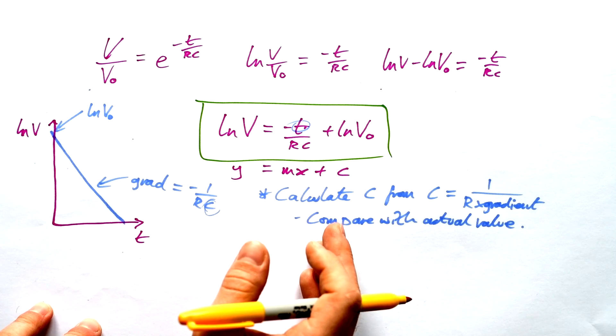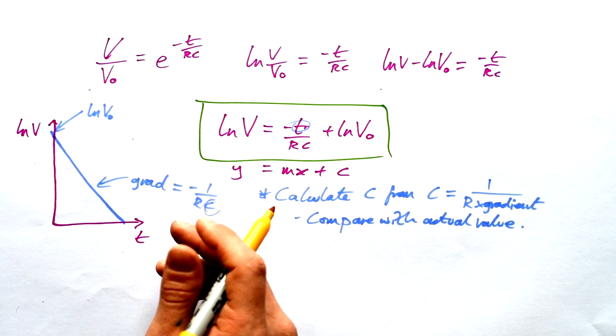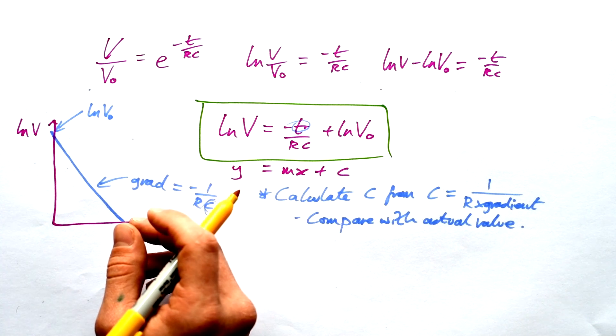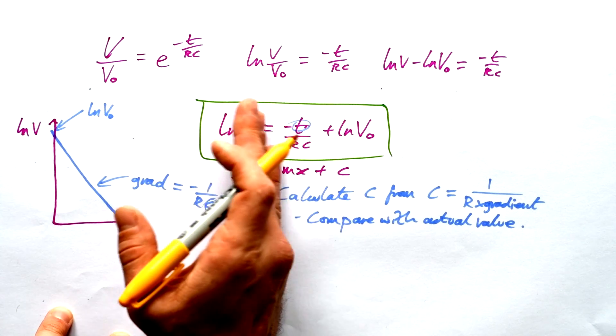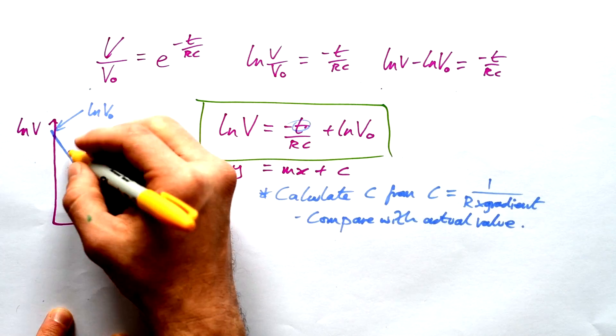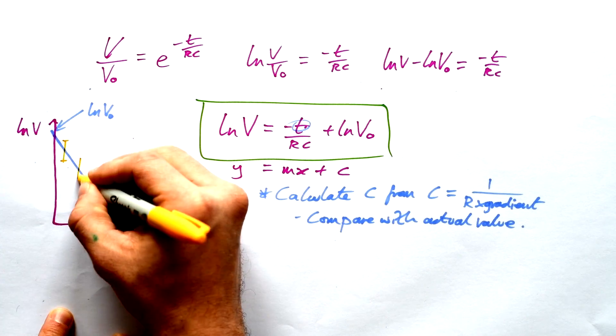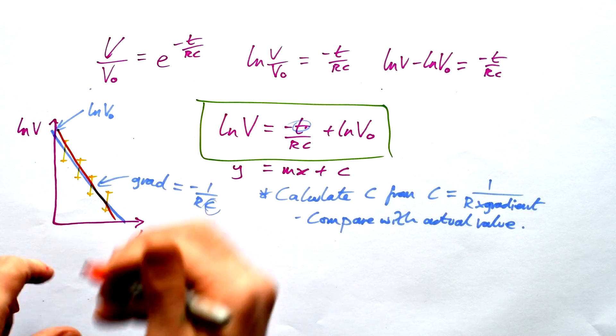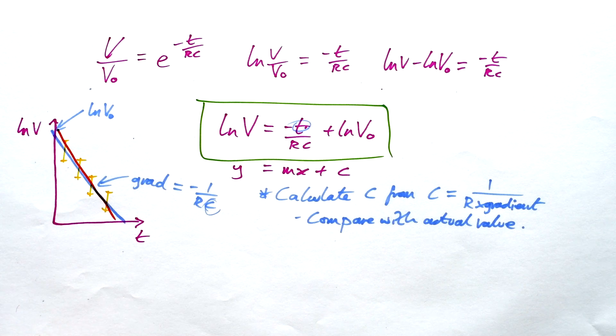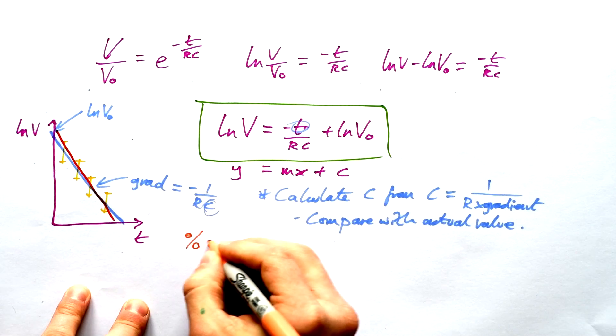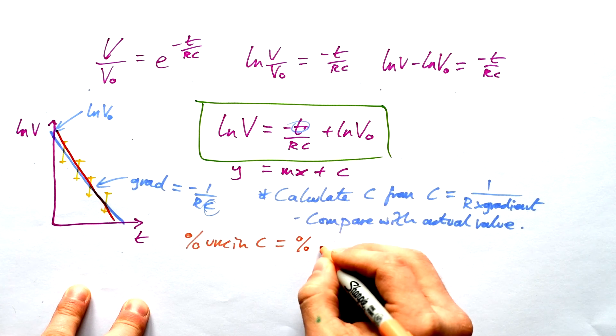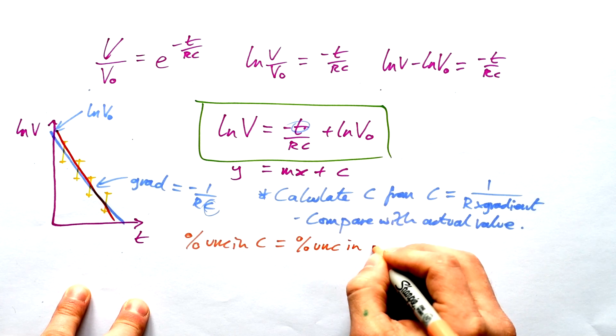Yeah, there might be a small uncertainty in the time, but when it comes to our analog voltmeter, there's always going to be a fairly hefty uncertainty in that because we're going to be unsure as to which line the needle is going to be closer to. So we do want to add error bars to our log V. And then we can obviously do a line of worst fit as per usual, and we can use that to find the uncertainty in the gradient.